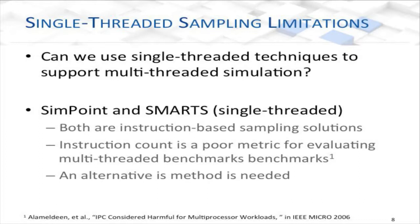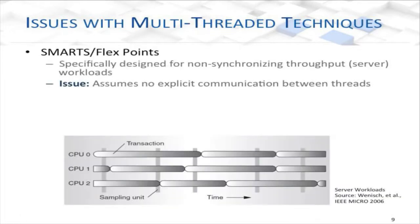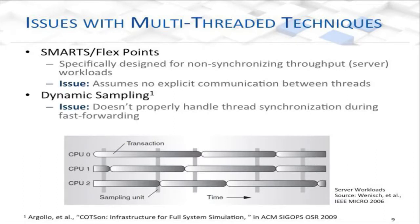The first true multi-threaded sampling technique was an upgraded version of SMARTS, which allowed people to take a server workload with independent threads — completely working independently — and periodically take little snapshots of the application to extrapolate performance. This works really well if there's no explicit communication between threads. But for workloads that communicate and work toward a single result, it breaks the assumptions of SMARTS. There are other works like dynamic sampling which don't synchronize during fast-forwarding, which is also an issue we try to address. This boils down to what I'm calling today the four pillars of multi-threaded sampling.